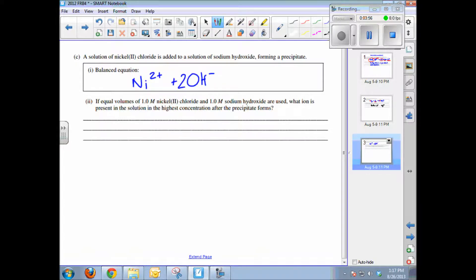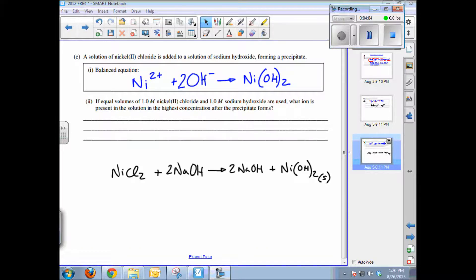The follow-up question: if equal volumes of 1.0 molar nickel(II) chloride and 1.0 molar sodium hydroxide are used, what ion is present in the solution in the highest concentration after the precipitate forms?